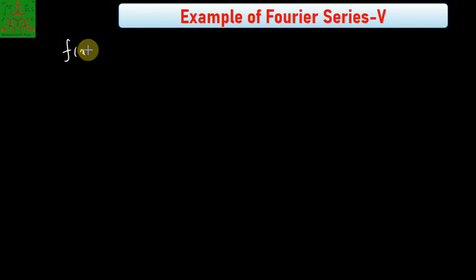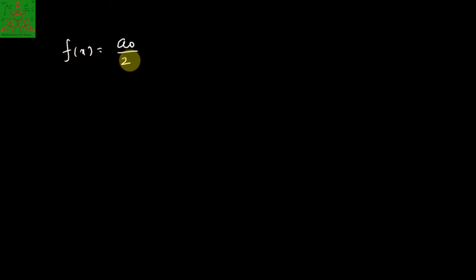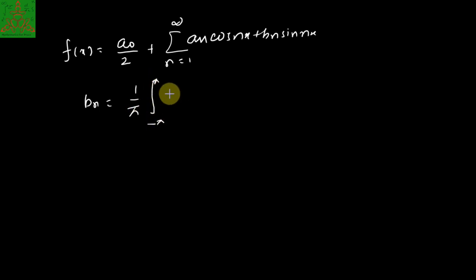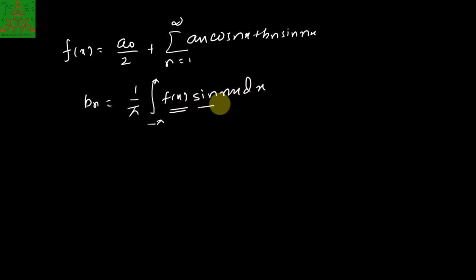We know that the Fourier series of the function f(x) can be written as a₀/2 plus summation n running from 1 to infinity of aₙ·cos(nπx/l) plus bₙ·sin(nπx/l). Where bₙ is defined as 1/l times the integral from −l to l of f(x)·sin(nπx/l) dx. Since f(x) is an even function and the limit is from minus 5 to 5, bₙ becomes 0.